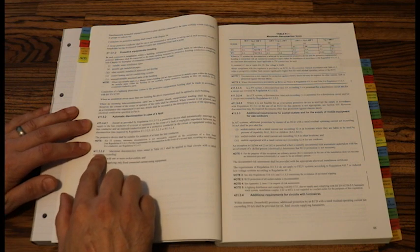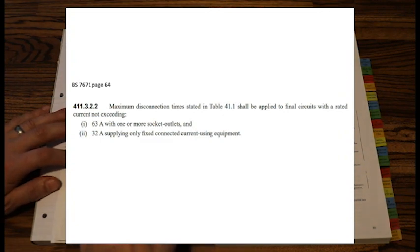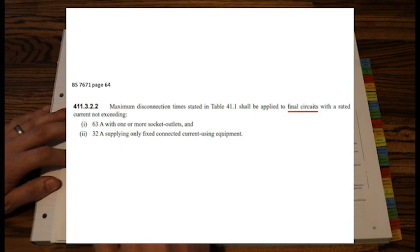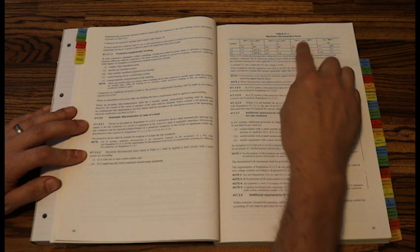This table applies if we first read this regulation. So 411.3.2.2 says maximum disconnection time stated in this table shall apply to final circuits with a rated current not exceeding 63 amps for a socket outlet or 32 amps for fixed current using equipment. Our question is for a distribution circuit. It's not a final circuit. So we don't use this table 41.1.